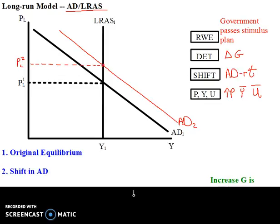Let's go through three steps of this story. Step one: the economy was at the original equilibrium — some GDP, some unemployment, some price level. Step two: we get the shift in aggregate demand because of an increase in government spending, shifting the aggregate demand curve to the right.